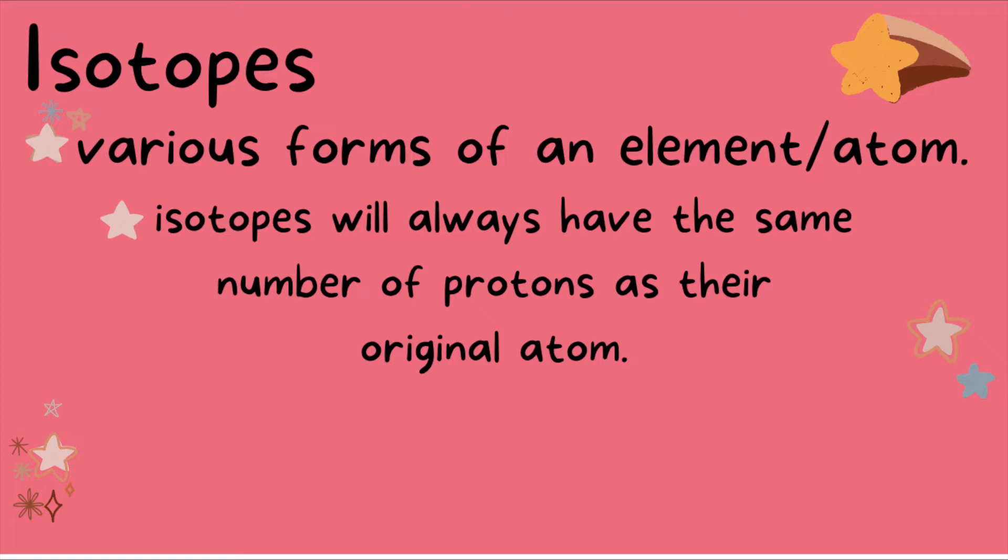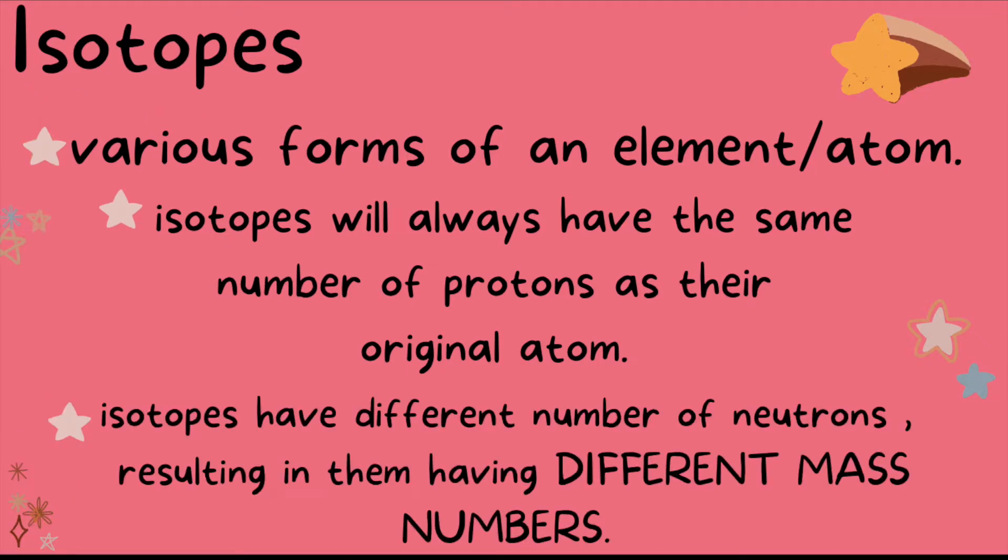The thing that changes with isotopes is the number of neutrons. And because the number of neutrons changes, the mass number will also change because the mass number is the total number of protons and neutrons in each atom. So of course the change in the number of neutrons will also reflect the mass number.